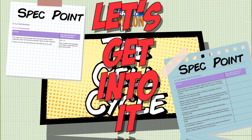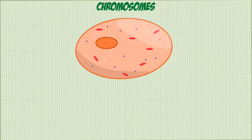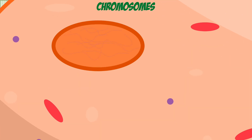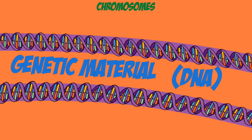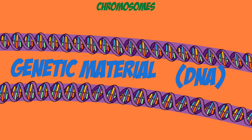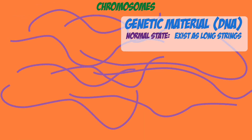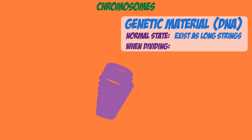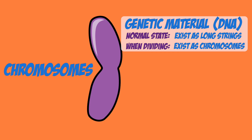First, let's explain what chromosomes are. Genetic material in cells is found in the nucleus and in their normal states, this genetic material or DNA is spread out as long strings. But when the cell prepares to reproduce and make a copy of itself, these strings coil up and condense into structures known as chromosomes.